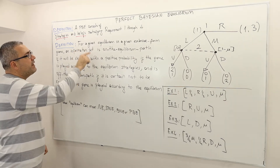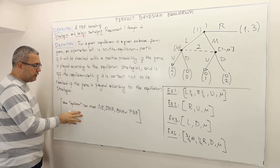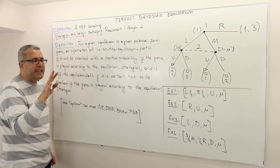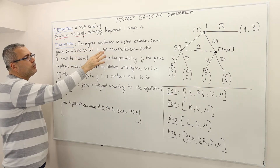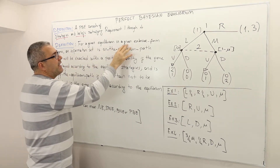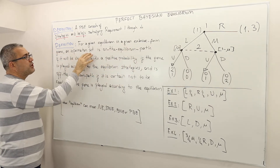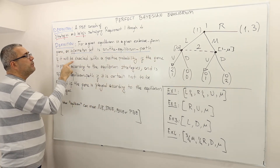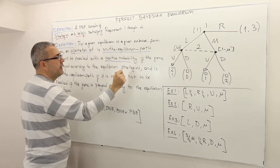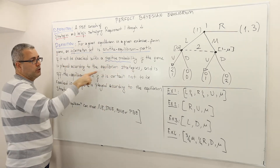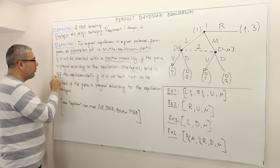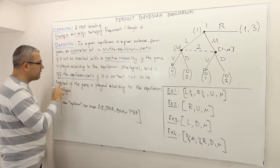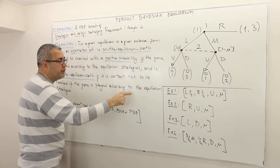For a given equilibrium — and whenever we say equilibrium, it may mean a Nash equilibrium, subgame perfect Nash equilibrium, Bayesian Nash, or perfect Bayesian, any equilibrium — for any given equilibrium profile in an extensive form game, an information set is on the equilibrium path if it will be reached with positive probability if the game is played according to the equilibrium strategies. It is called off the equilibrium path if it is certain, probability one, not to be reached if the game is played according to the equilibrium strategies.